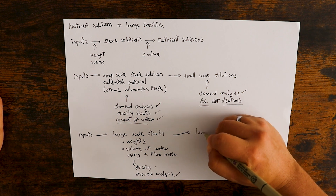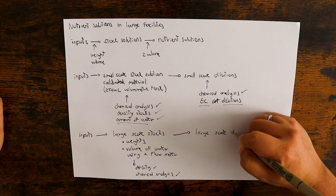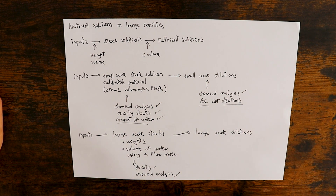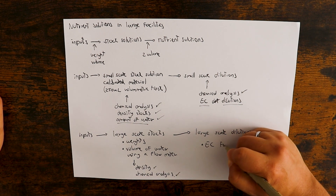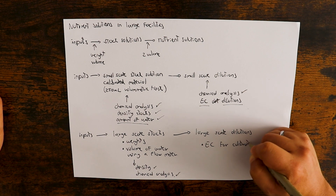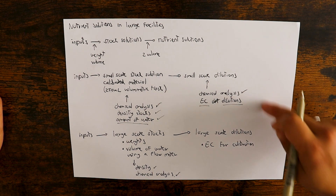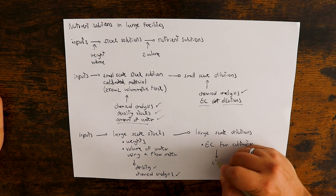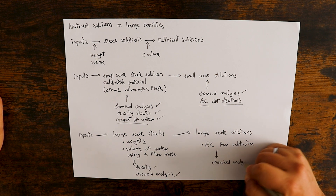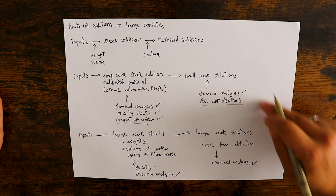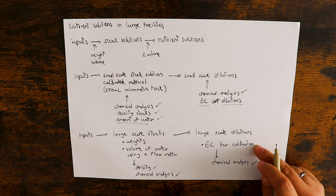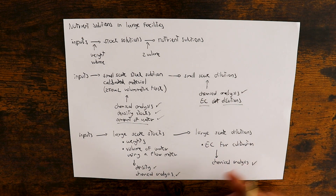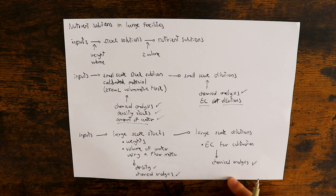Finally, we do large-scale dilutions using our injector system. We can use the EC values from the small-scale dilutions for calibration — we know what the EC of the dilutions should be and we use those values to calibrate the injectors. Then we do chemical analysis and verify that we can get just as good a measurement here as at small scale. The EC from small-scale preparations tells us whether we hit more or less the right numbers, and the chemical analysis is the final confirmation.